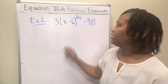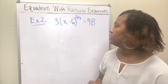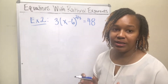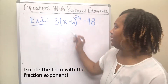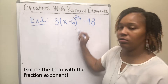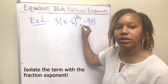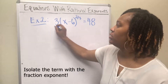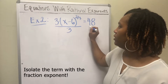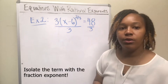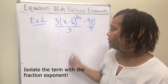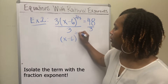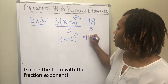Example 2: we want to solve 3 times (x minus 6) to the 2/3rds equals 48. First, we need to isolate the part that has the exponent — (x minus 6) to the 2/3rds — before we can get rid of this exponent. So we want to get rid of this 3 in front. To get rid of multiplication, you divide both sides by 3, which leaves you with (x minus 6) to the 2/3rds equals 16.